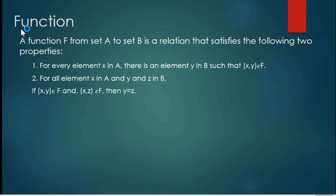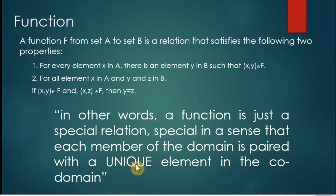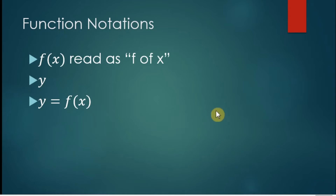If those two conditions are met, then that relation is considered a function. Simply put, a function is a special relation in which each member of the domain is paired with a unique element in the codomain. In a relation, an element in the domain may be mapped to more than one element in the codomain. But if every element in the domain is paired with only one — a unique — element in the codomain, then that relation is a function.